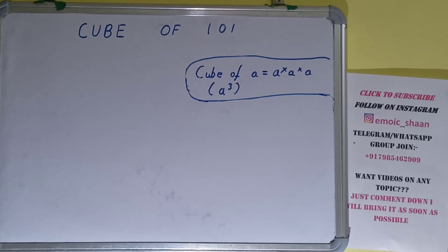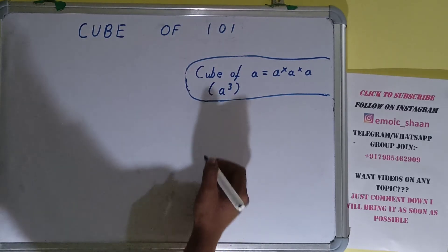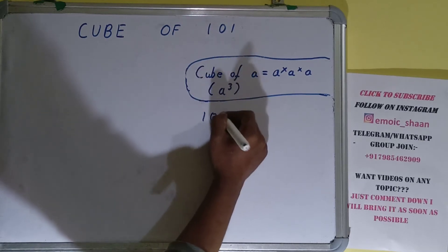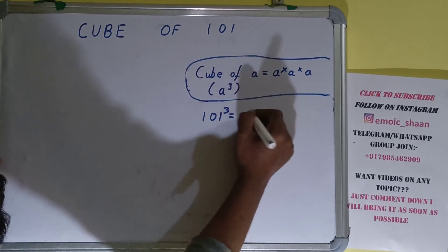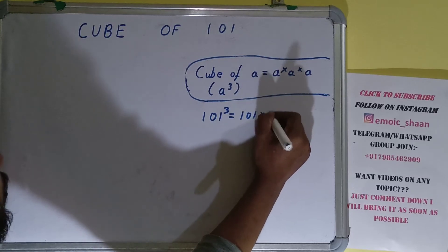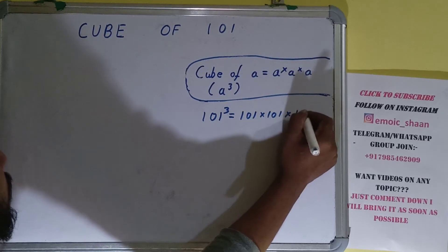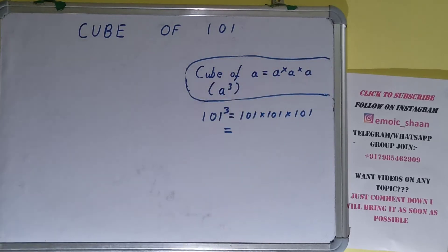Now moving on to our question, we need cube of 101. So for that what we need to do is in place of this a we need to keep 101. So 101³ equals 101 into 101 into 101.